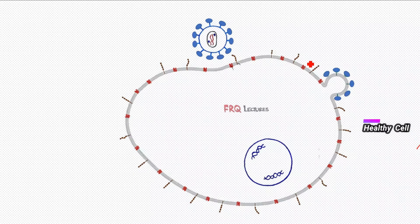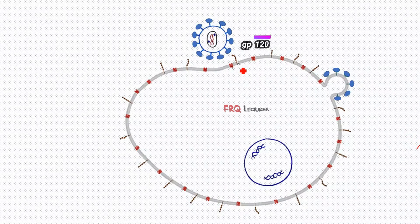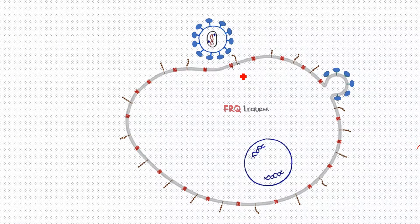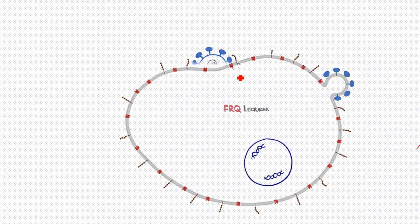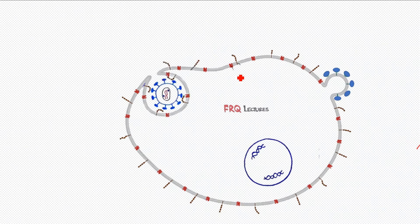At first, two interactions take place between the glycoprotein of HIV and the receptors of the macrophage or healthy cells. This oval-shaped thing is gp120, and it will interact with the CD4 molecule of the macrophage. After doing so, there is also another interaction between CCR5 and gp120. After these two interactions, HIV is able to fuse or enter within our cell.